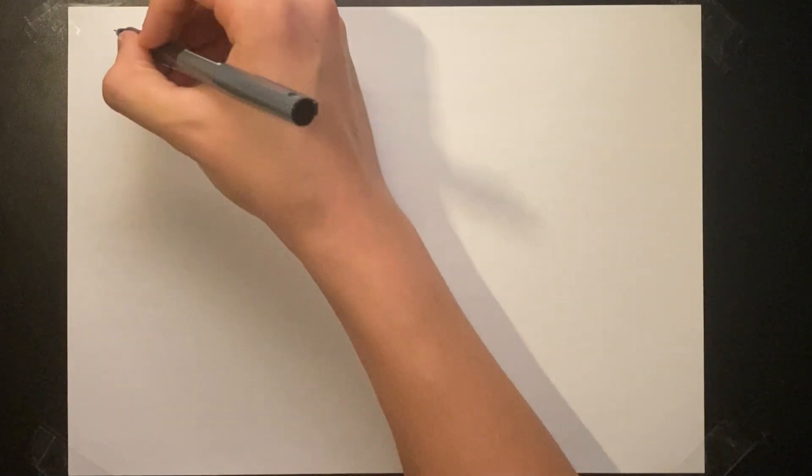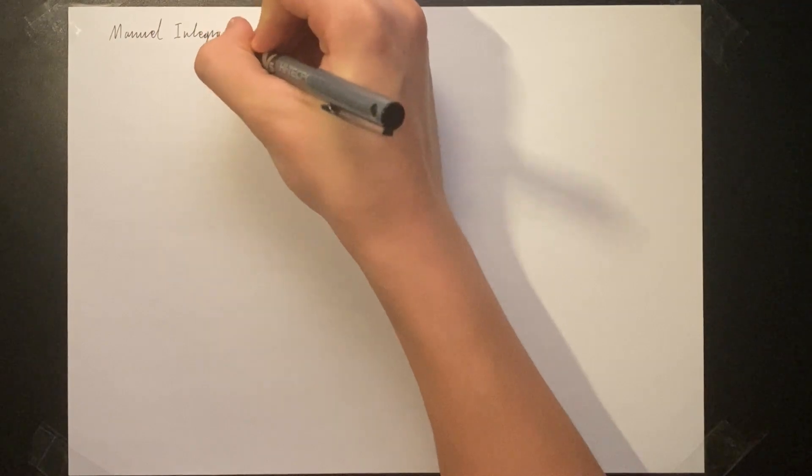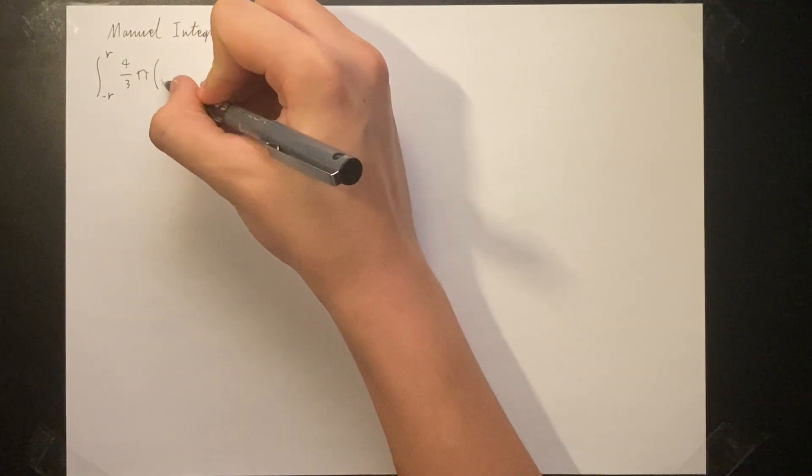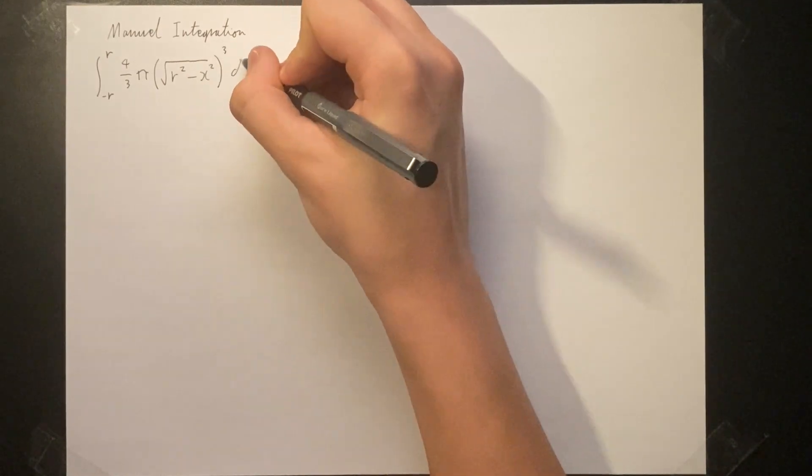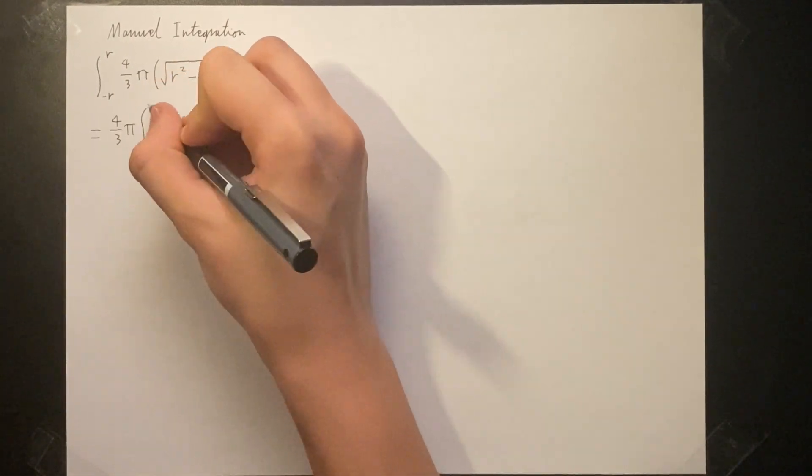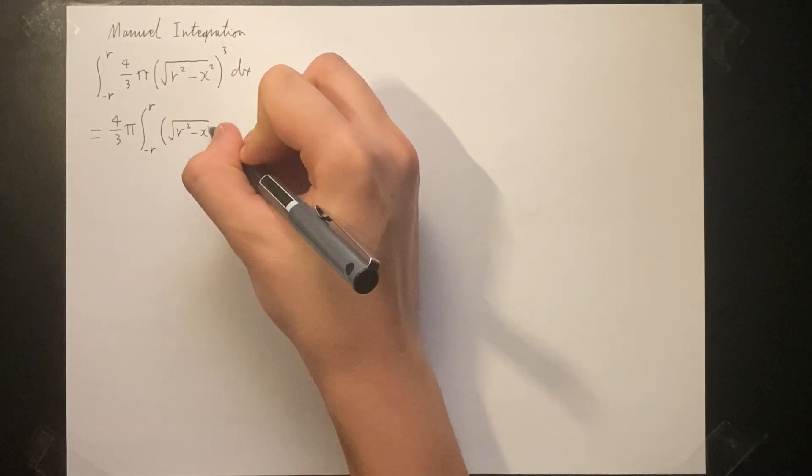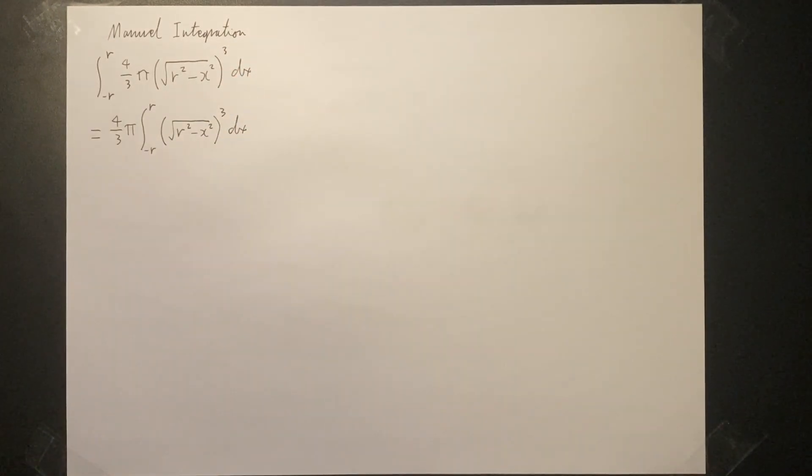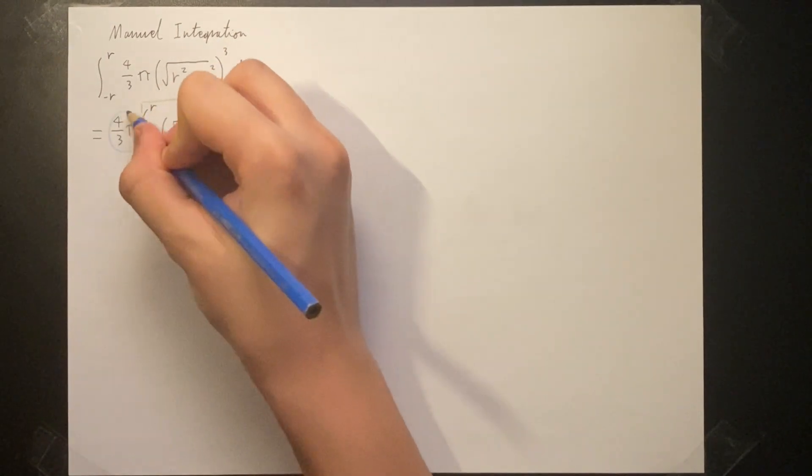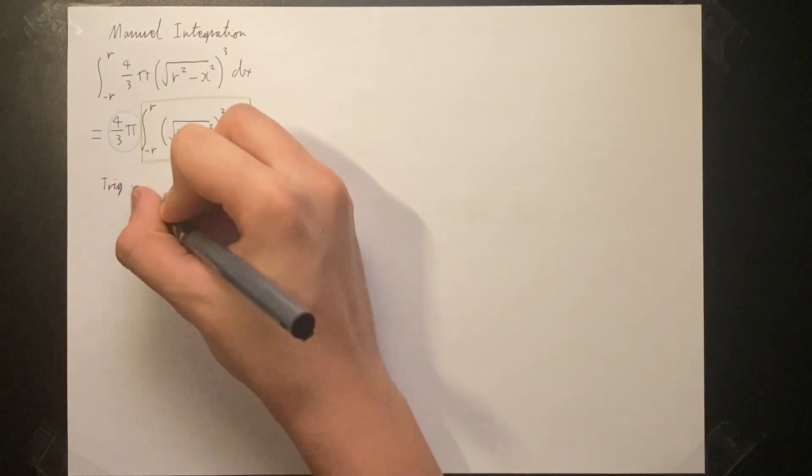The following integral is very challenging but is solvable through trigonometric substitution and reduction. We start off with our integral from negative r to r. We can ignore the bounds for now and factor out the constant four-thirds pi. We can also simplify the exponent to three halves. I will circle the constant in blue that we will ignore for now and come back to later. The green box is what we are going to solve.